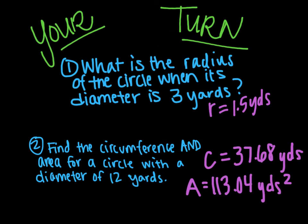All right, answers. Radius is 1 1⁄2 yards. Then number two, the circumference is 37 and 68 hundredths yards. Area is 113 and 400ths yards squared. Make sure you have that label appropriate. If you did not get these answers, go back and fix it so that you do, showing your work. And if you still can't do that, then be sure to ask the questions in class.